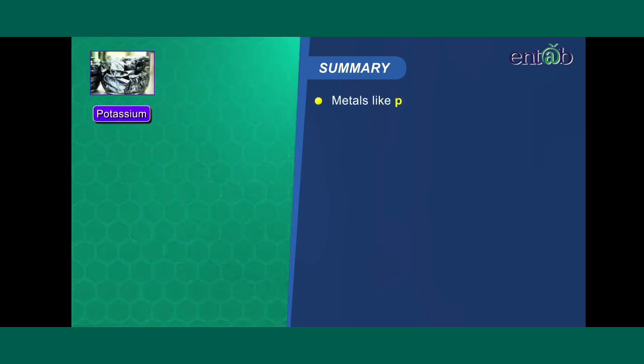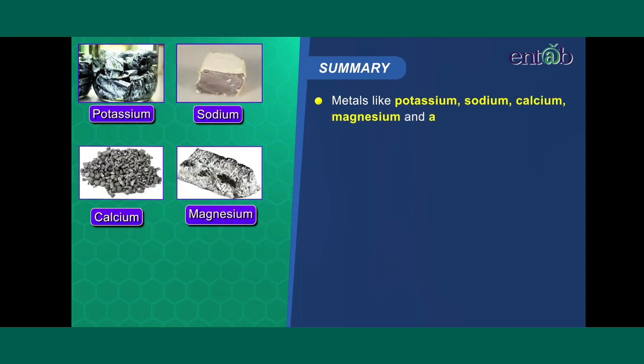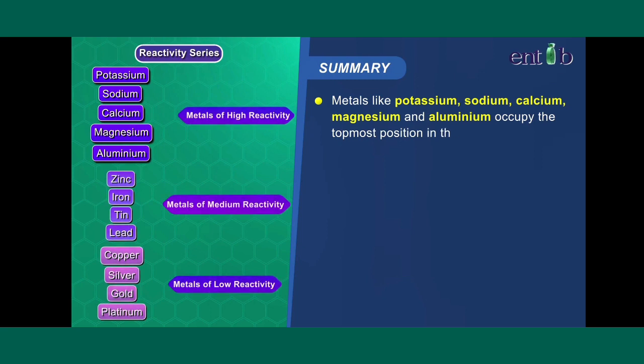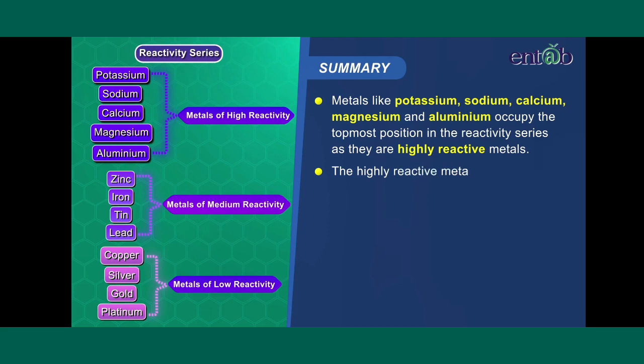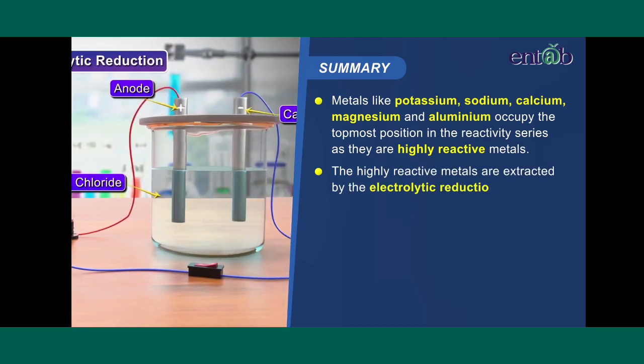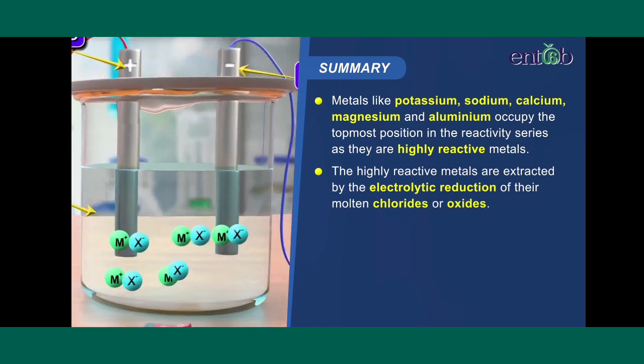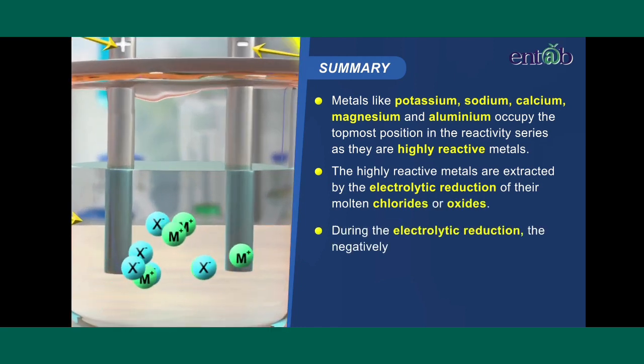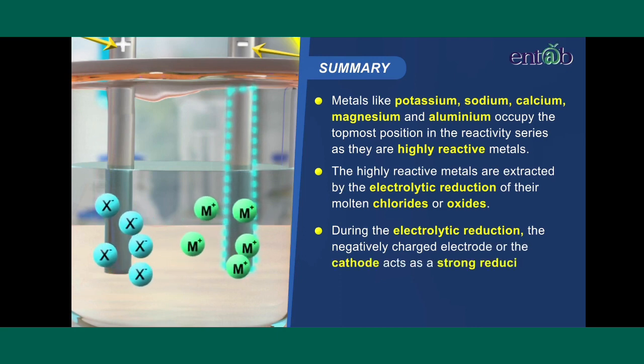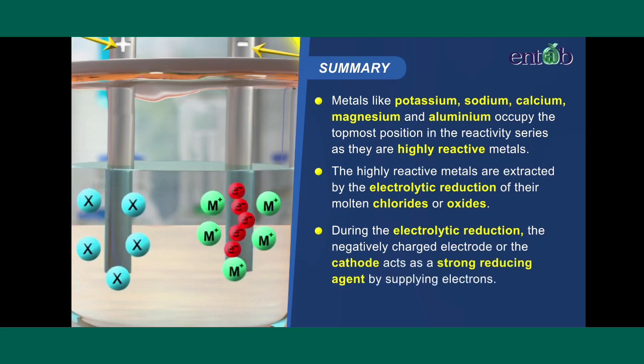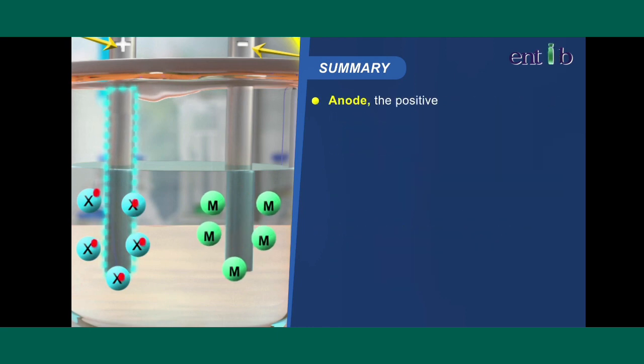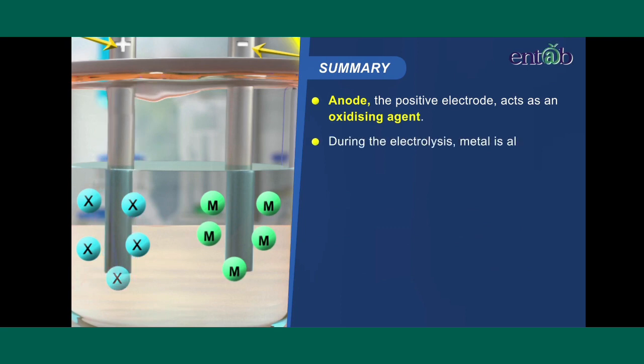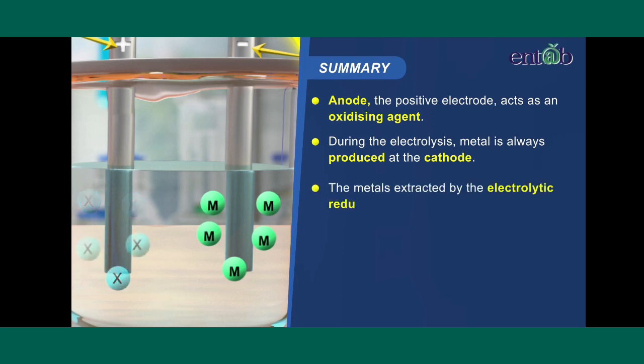Metals like potassium, sodium, calcium, magnesium and aluminium occupy the top position in the reactivity series as they are highly reactive metals. The highly reactive metals are extracted by the electrolytic reduction of their molten chlorides or oxides. During the electrolytic reduction, the negatively charged electrode or the cathode acts as a strong reducing agent by supplying electrons. And note, the positive electrode acts as an oxidizing agent. During the electrolysis, metal is always produced at the cathode. The metals extracted by the electrolytic reduction are very pure.